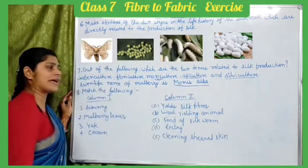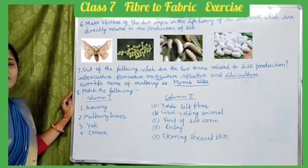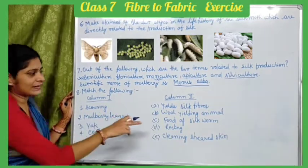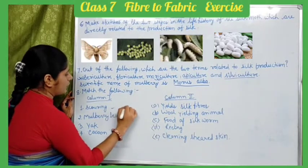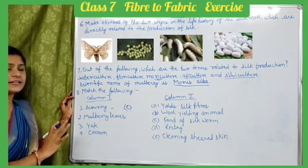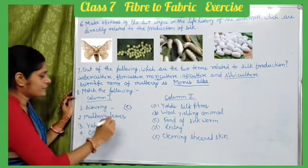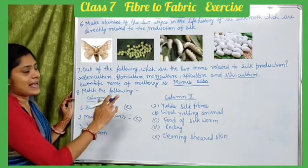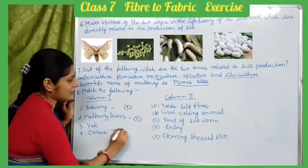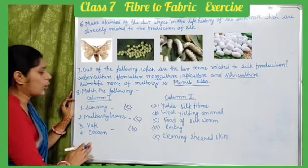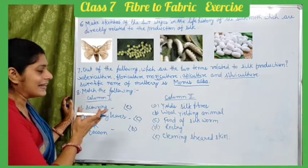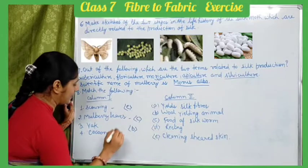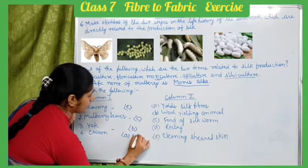The next question asks you to match column 1 to column 2. Scouring is the cleaning of shorn skin. Yak is a wool-yielding animal, so yak matches with wool. Cocoon is related to reeling — reeling yields silk fiber. So the matches are: scouring–E, yak–B, cocoon–A and D (reeling).